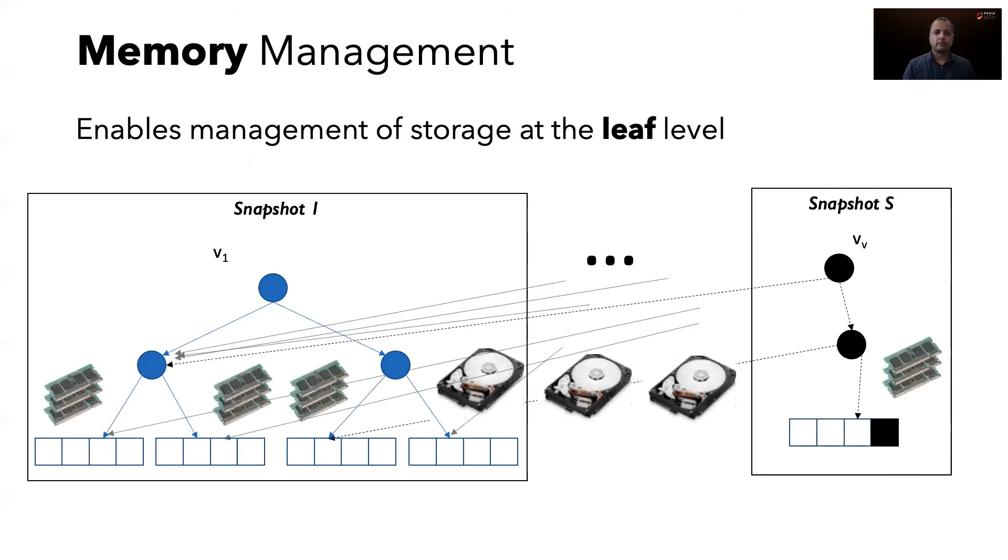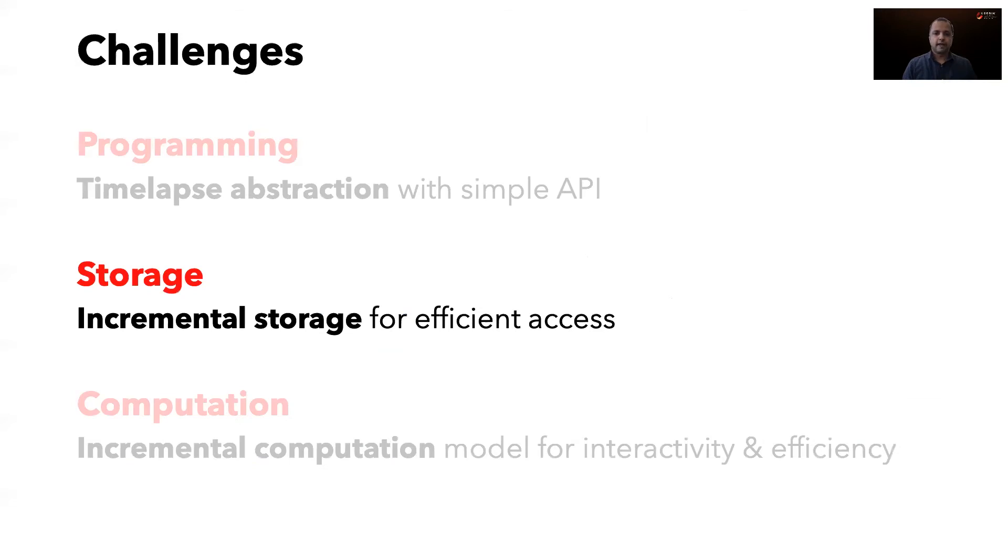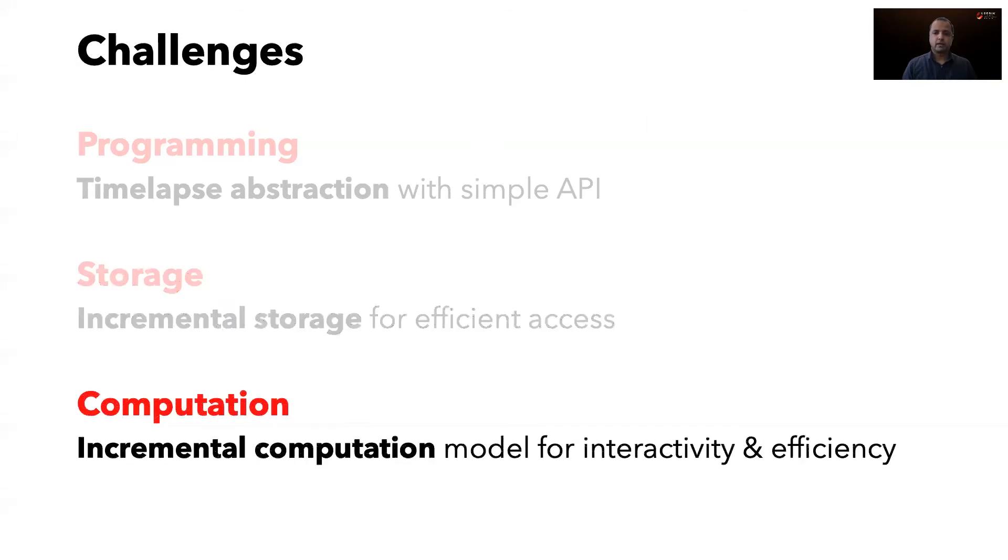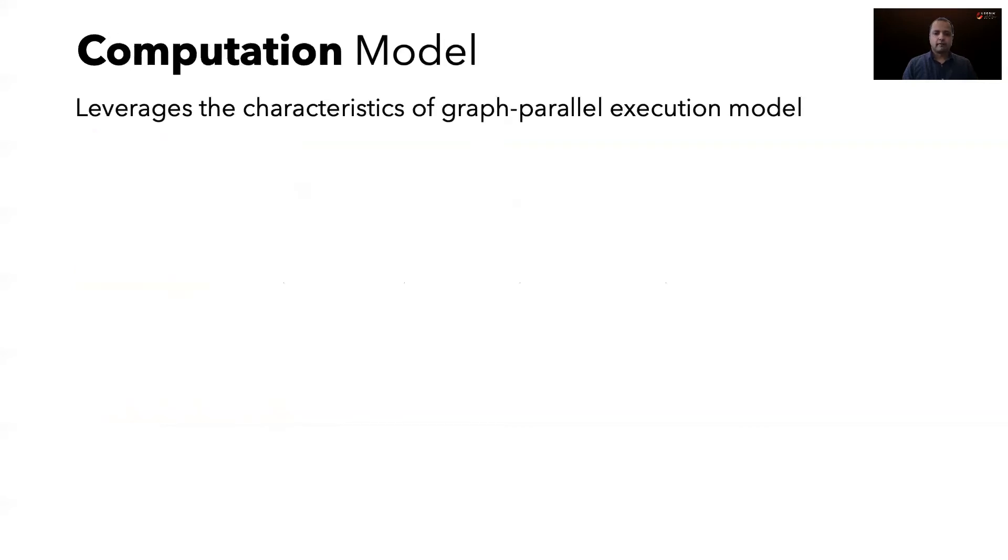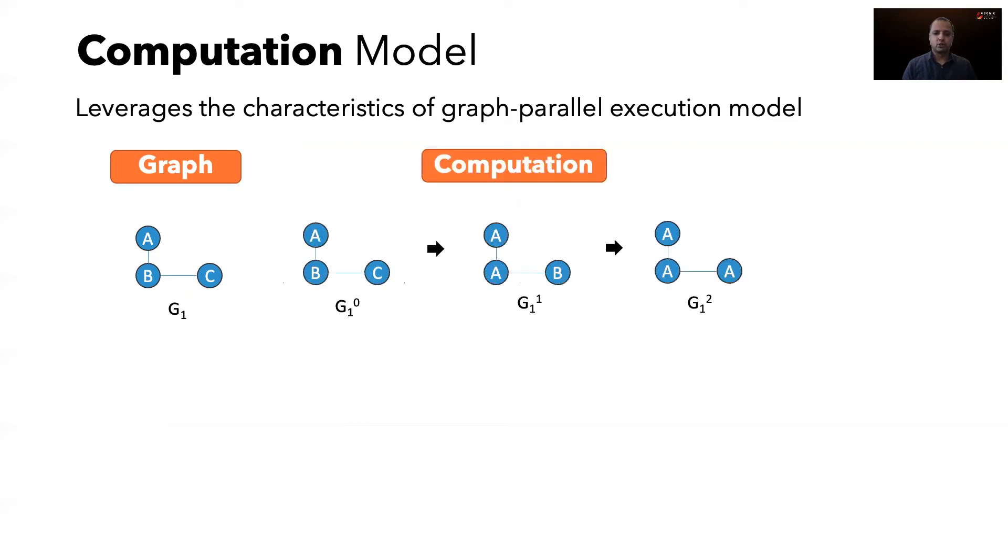The final challenge is enabling efficient computation. Here, Tegra proposes an incremental computation model. Tegra leverages the graph parallel execution model. For example, the label propagation algorithm on a graph G1 can be expressed as a vertex program that picks the smallest label received from its neighborhood until convergence. Bootstrapping with the original labels, the execution completes in two iterations, resulting in R1.